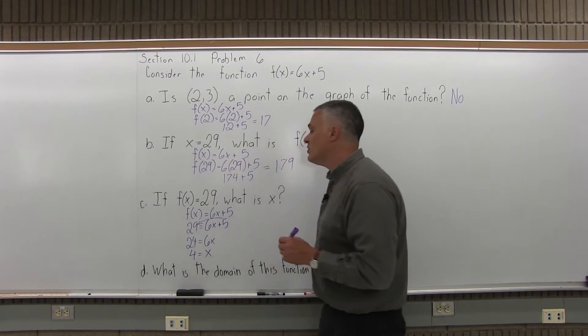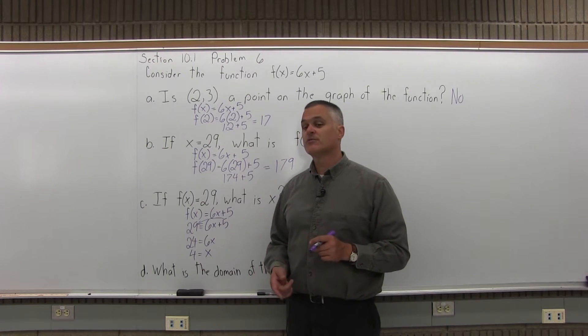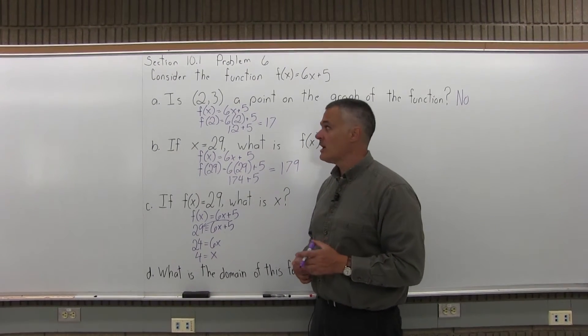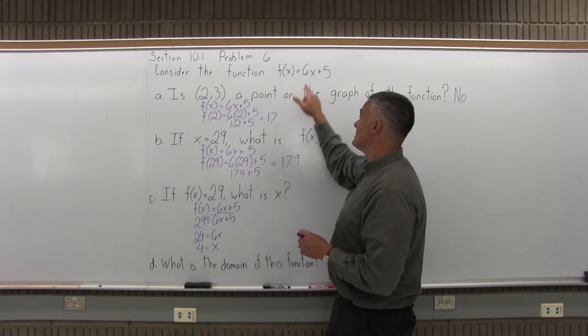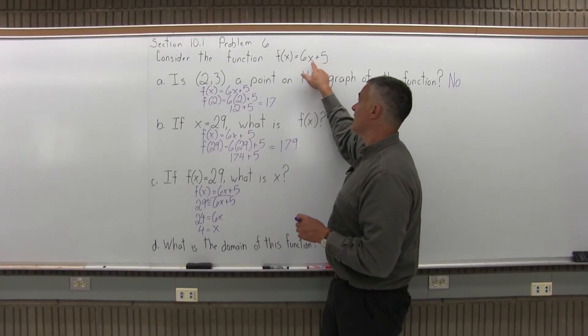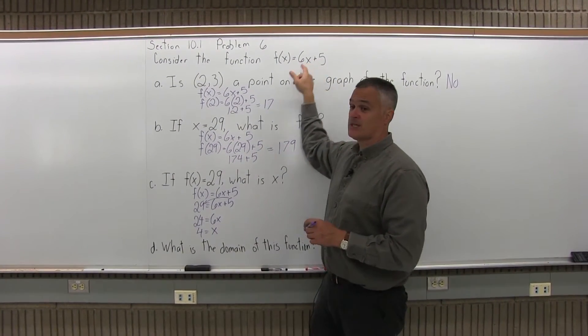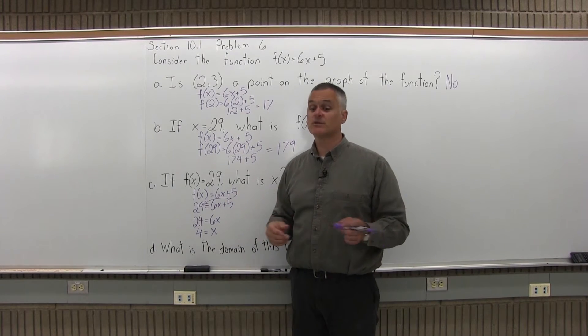So I claim that if you got out a 29, you must have put in a 4, and you can try it. If the function is 6x plus 5, and you're using a value of 4 for x, 6 times x is 24 plus 5 more. Sure enough, it's 29. It works.